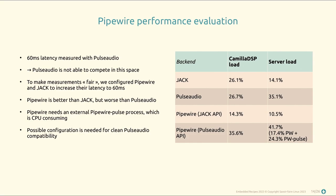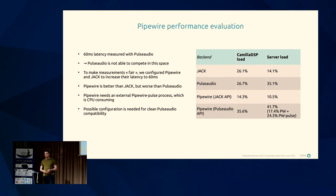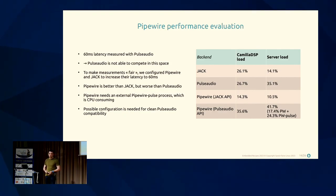At equivalent latency, JACK showed higher CPU consumption compared to PipeWire. For PulseAudio it's a bit different — we see higher CPU consumption with PipeWire in that case, but this is because to use the PulseAudio backend of Camilla DSP we needed to run a second process called pipewire-pulse, which acts as a bridge between PulseAudio clients and PipeWire and adds to the CPU consumption.